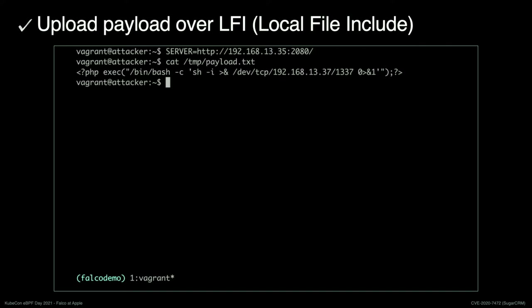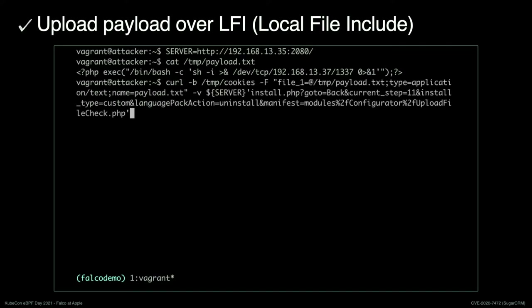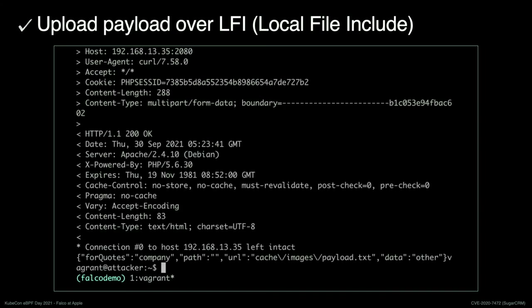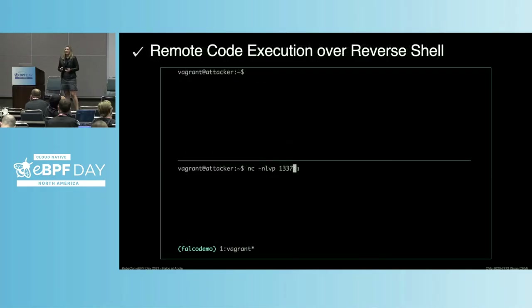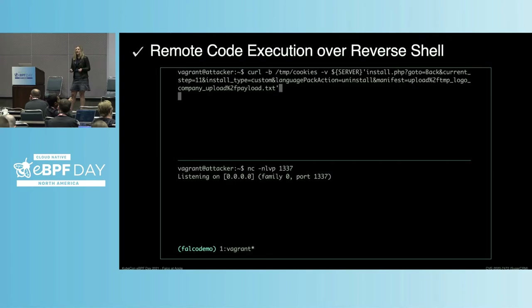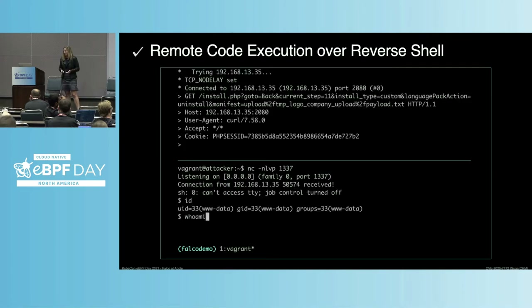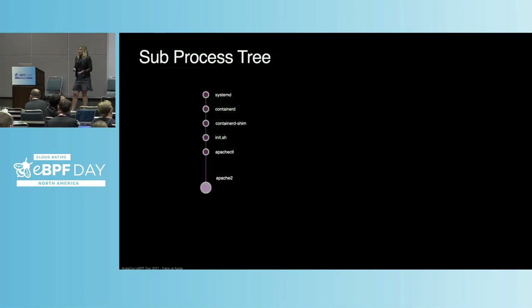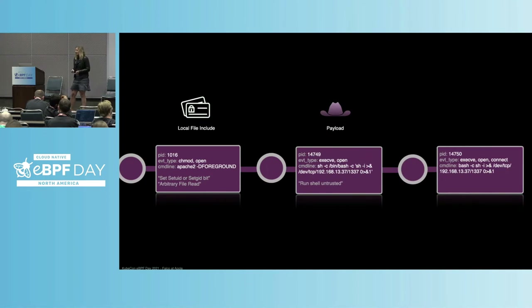The file we create would typically contain a payload that gives us a shell on the victim machine. In this example application, there was an authenticated endpoint that processes uploaded files. So we simply include the admin upload functionality PHP file with the LFI in order to upload our script to the web app. After setting up the listener on the attacker machine, we make another request to include the just-uploaded file with the LFI and that way invoke the payload. Now we have remote code execution on the box.